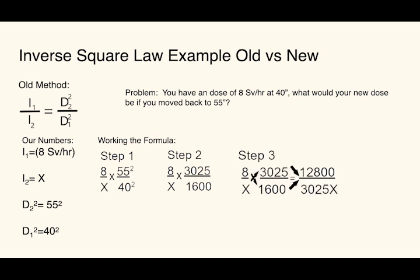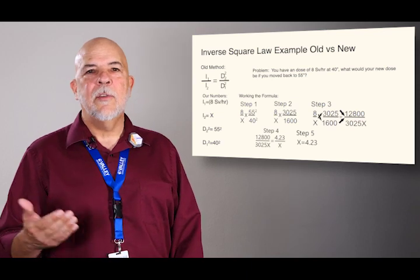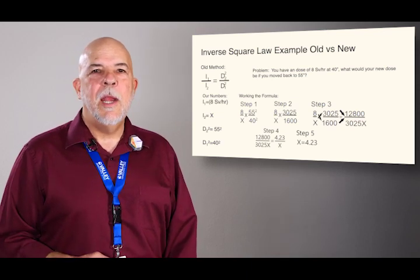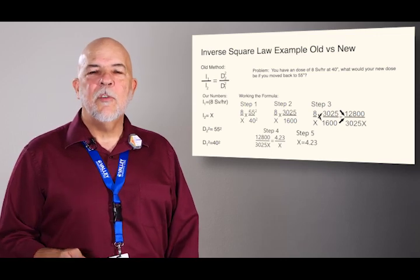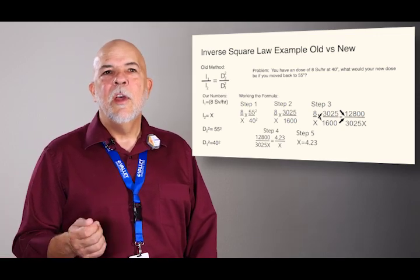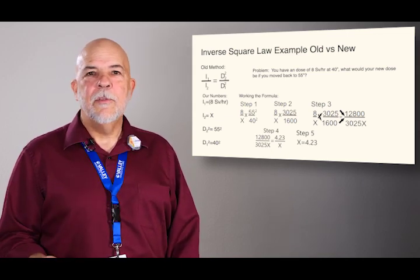At step three, you cross multiply as you're shown here, or you can invert and multiply. Either one of those will work. At step four, you reduce your fraction so that you're isolating X. And then as your final step, you just invert the formula so that you have X equals your remaining value. So in this case, 4.23 sieverts per hour at 55 inches versus 8 sieverts per hour at 40 inches.